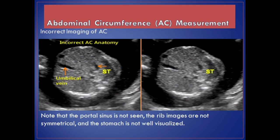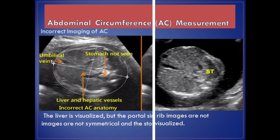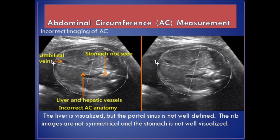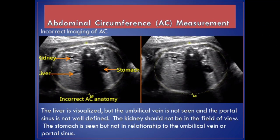Incorrect imaging of AC. Note that the portal sinus is not seen, the rib images are not symmetrical, and the stomach is not well visualized. The liver is visualized but the portal sinus is not well defined. In another example, the umbilical vein is not seen and the portal sinus is not well defined. The kidney should not be in the field of view. The stomach is seen but not in relationship to the umbilical vein or portal sinus.